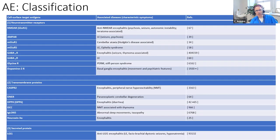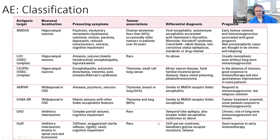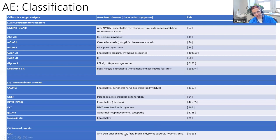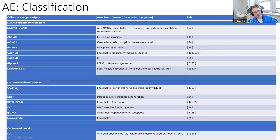One way to think about autoimmune encephalitis is by the antigen targeted by that specific autoantibody. Are the antigens cell surface antigens - neurotransmitter receptors, transmembrane proteins, or secreted proteins not bound to the membrane? So you have these antibodies - are they binding to receptors, transmembrane proteins, or secreted proteins?